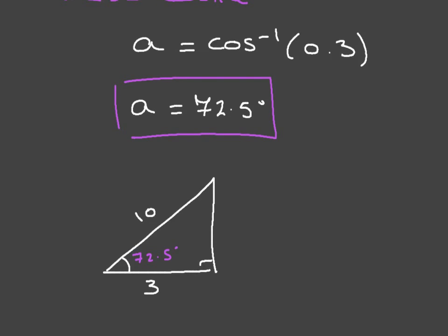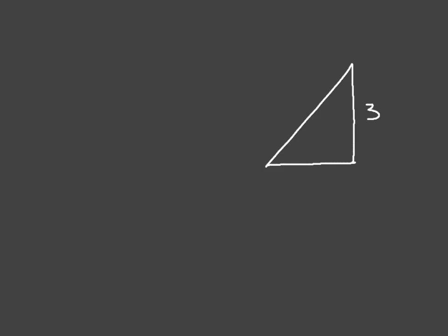Now let's look at another example. Let's say we're given this right-angle triangle. We're told that this side length is 3, this one is 6, and this interior angle — which we'll call B — is what we're looking for. So we're being asked to find the angle B. We look at the information we have relative to the angle. Relative to B, we're given this side length 3, which is adjacent to B.